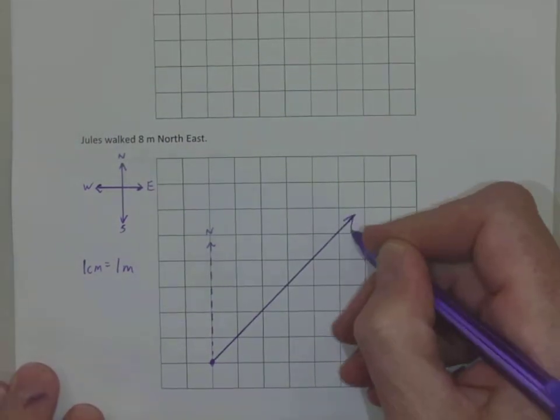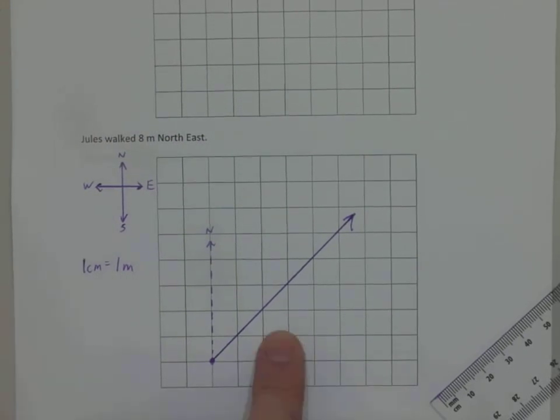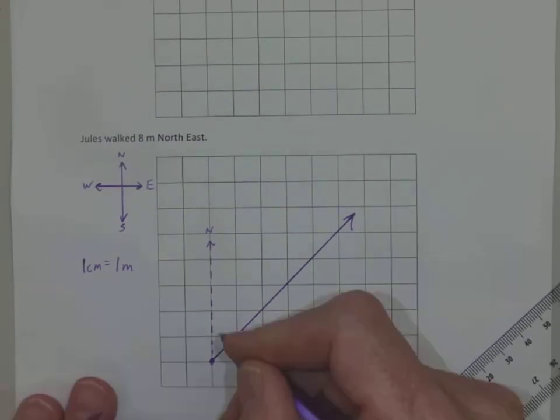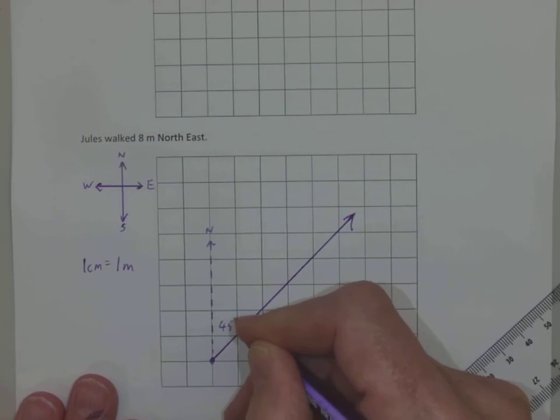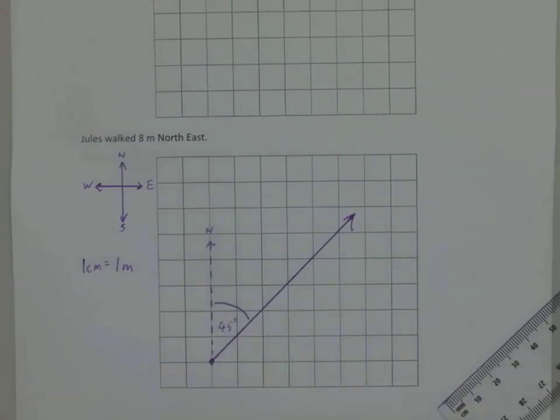Now I've got an orientation, a scale, and a vector. If I wanted to make absolutely certain that the person reading my work didn't get confused, I could put in the angle 45 degrees here to make absolutely certain. But it's not necessary.